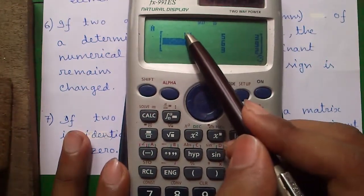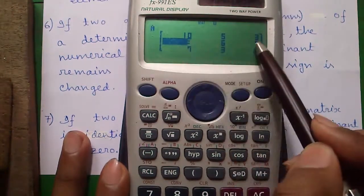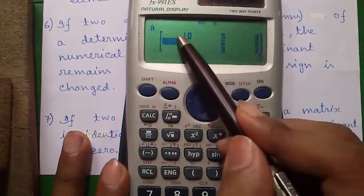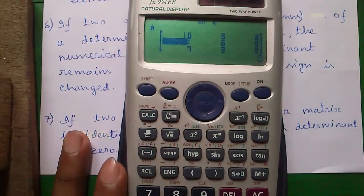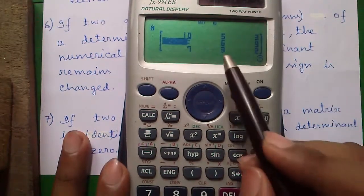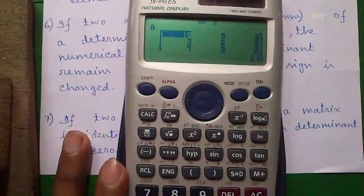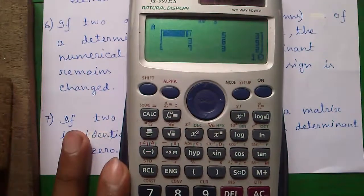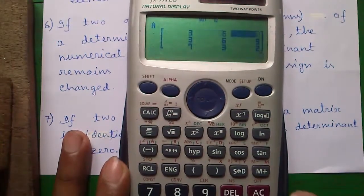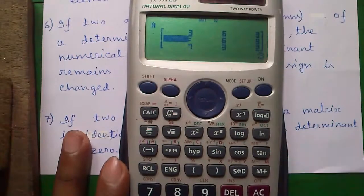That means if we write all the values in row 1 in row 2 and all the values in row 2 in row 1, the determinant will remain unchanged. So let me try it. So first writing row 2 values in row 1 and row 1 values in row 2.